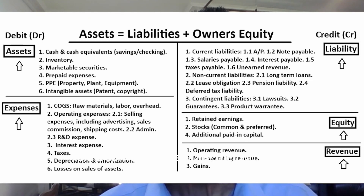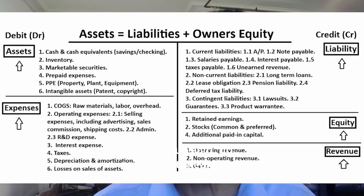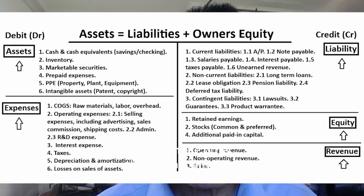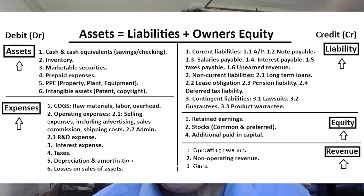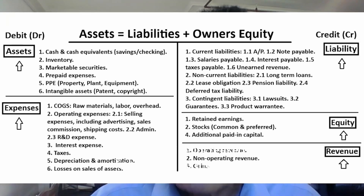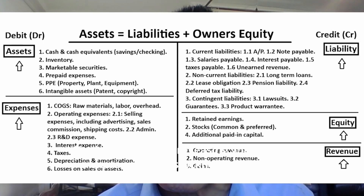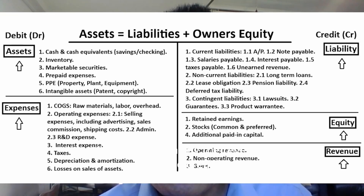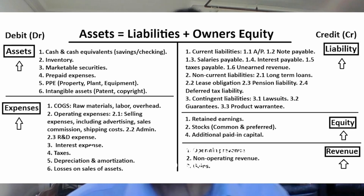Here are the two items on the debit side: anything increasing your asset will be a debit, and anything increasing your expenses is also a debit. On the right-hand side, anything increasing liability will be a credit. Similarly, anything increasing your equity — stockholders' equity — is also a credit. Anything increasing revenue is also a credit. So those two sides are opposites.